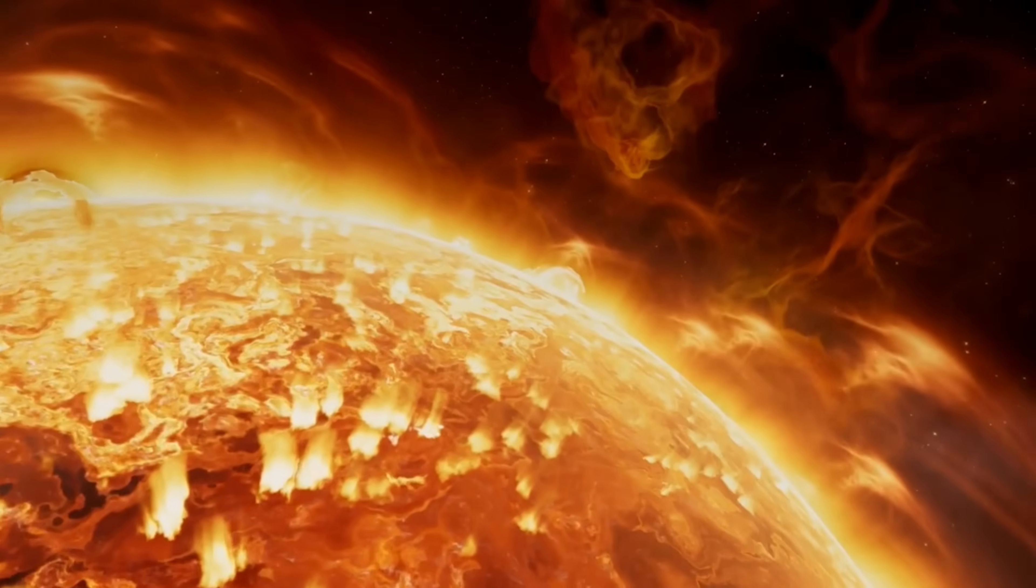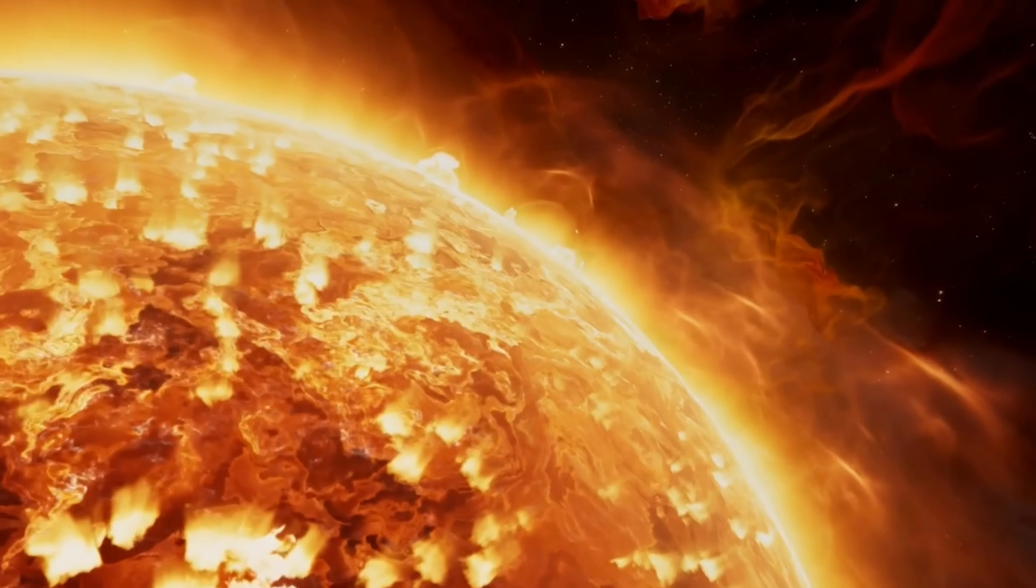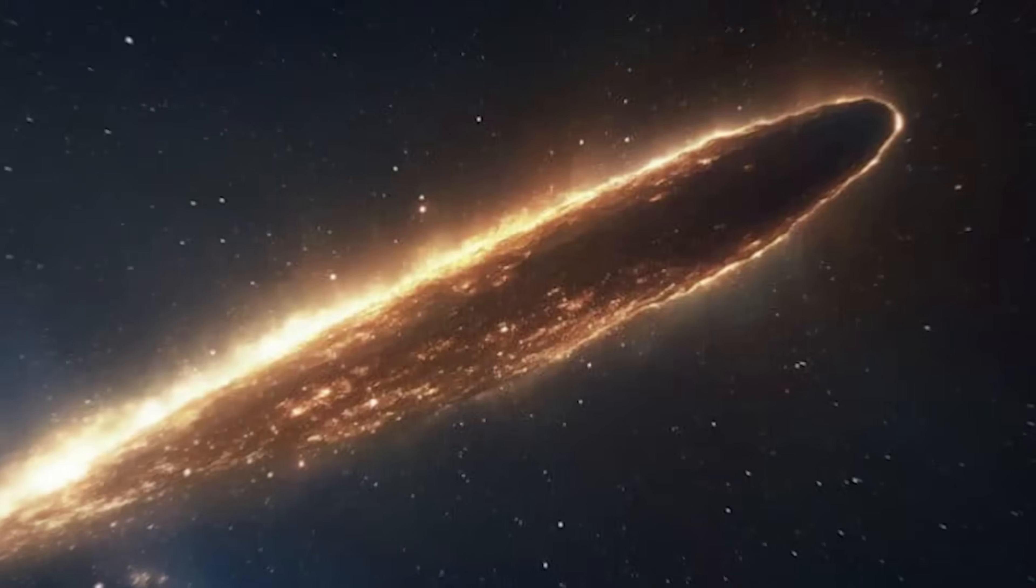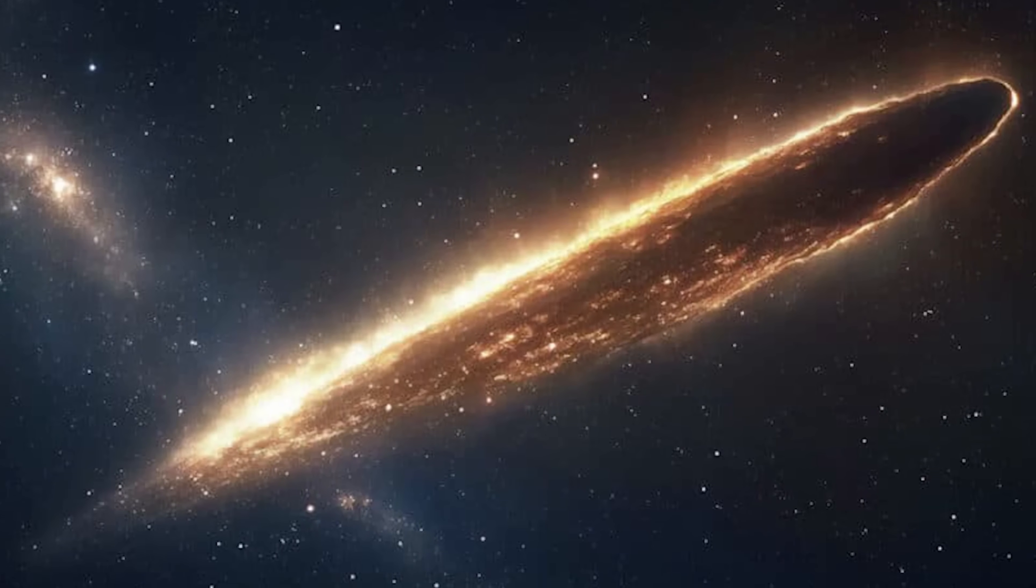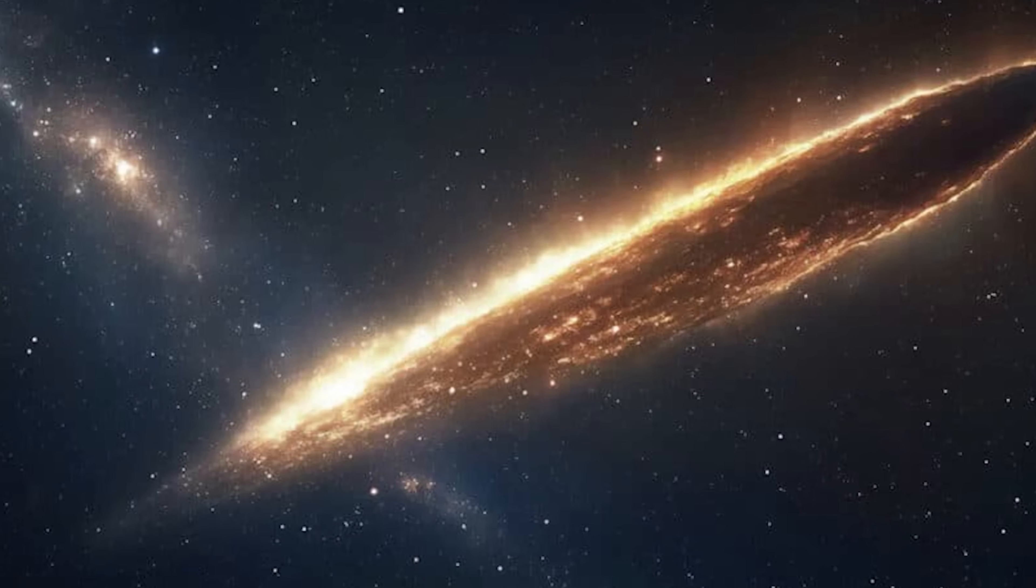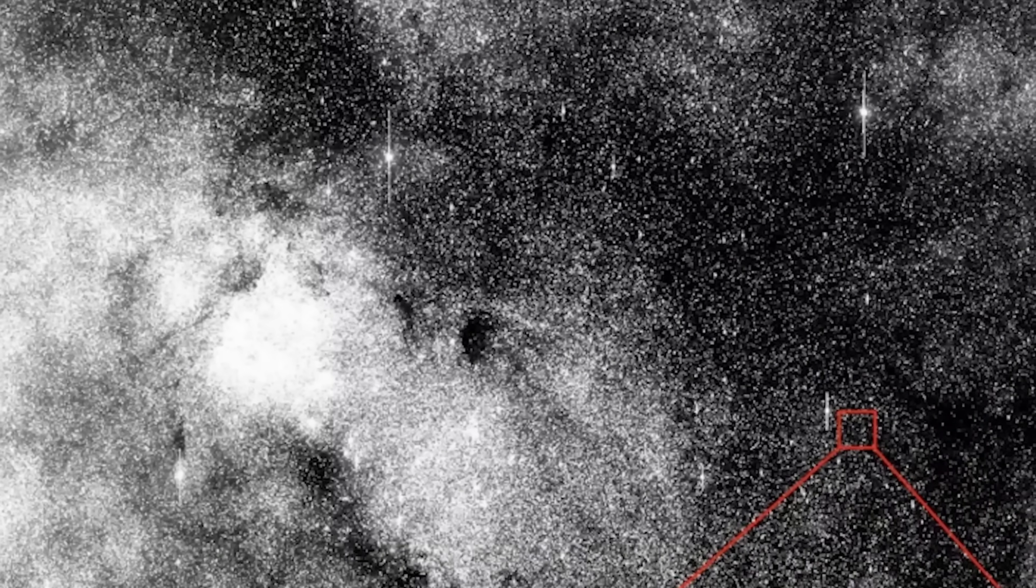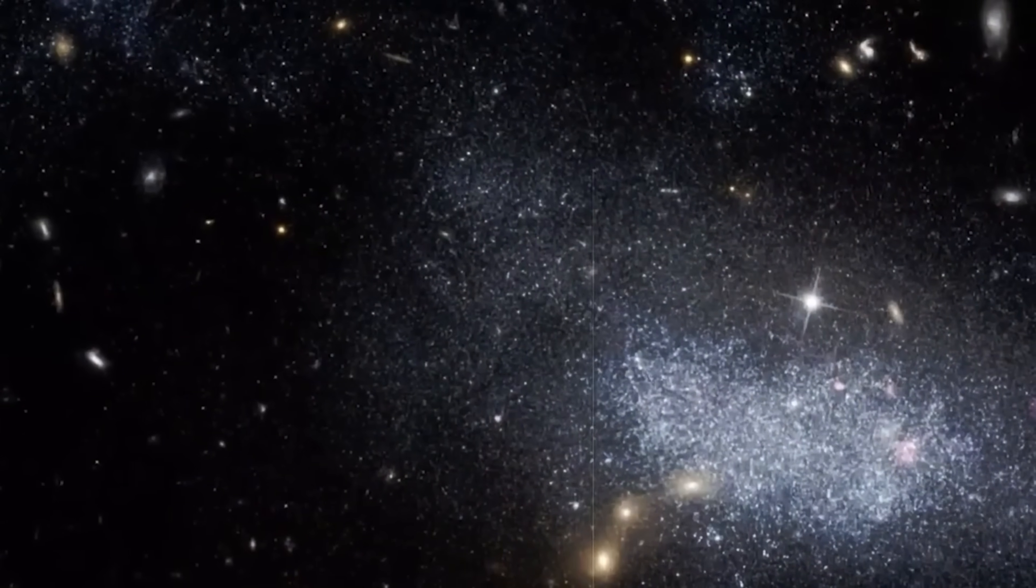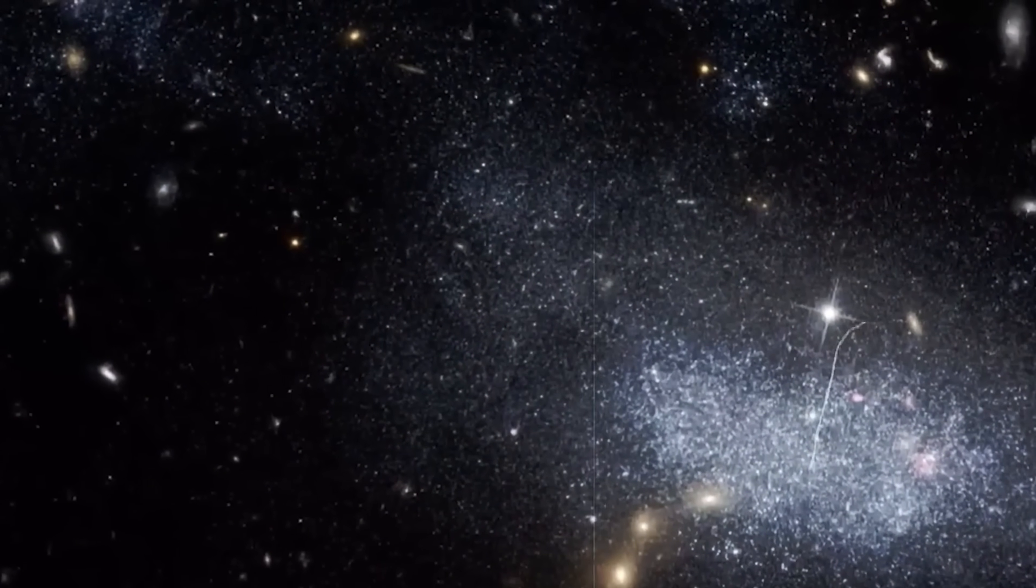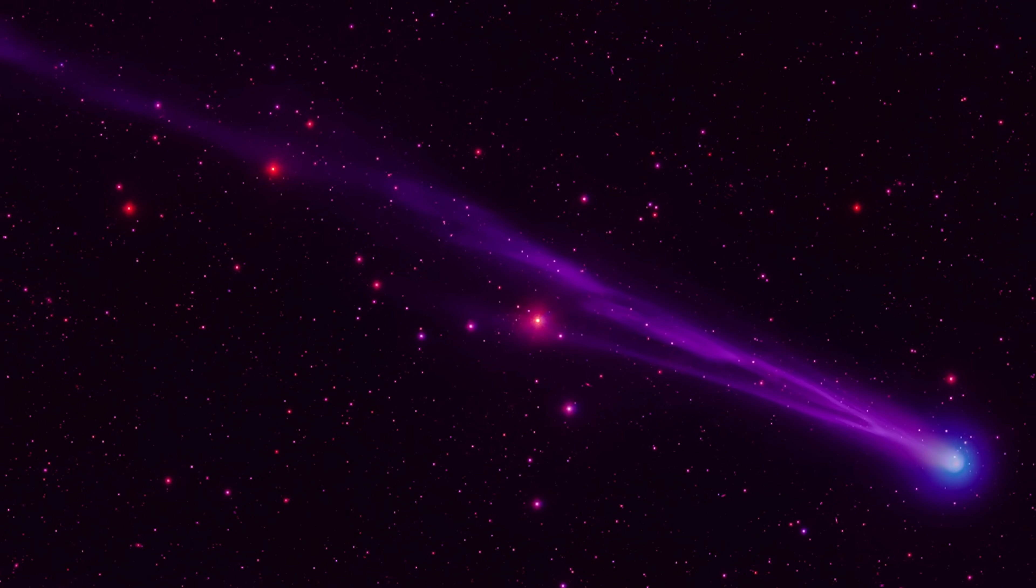Most comets form a tail that streams away from the Sun as solar radiation pushes gas and dust backward. 3I Atlas did the opposite. Its faint tail, or what appeared to be one, was angled toward the Sun, a phenomenon known as an anti-tail. Only a handful of comets have ever shown this feature, and never one of interstellar origin. At first, astronomers thought it might be an optical illusion caused by perspective, but further imaging confirmed the structure was real.